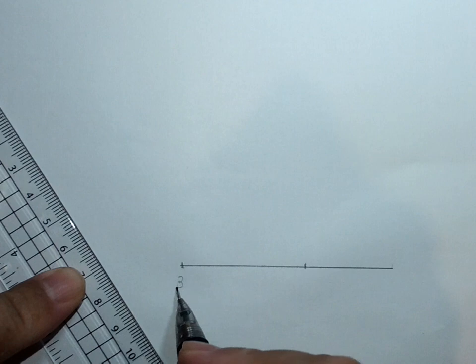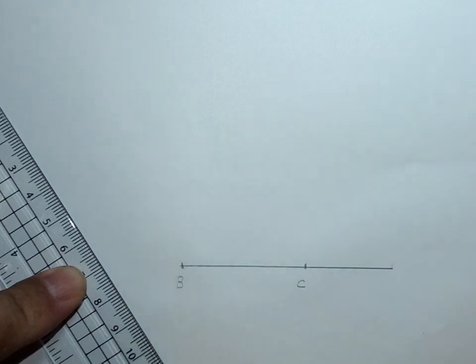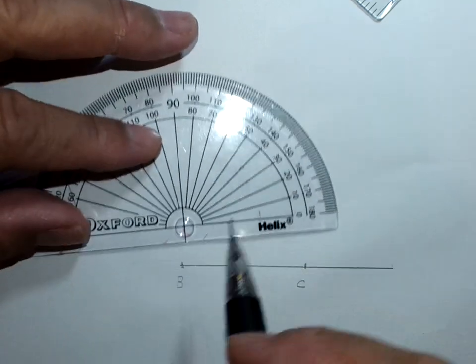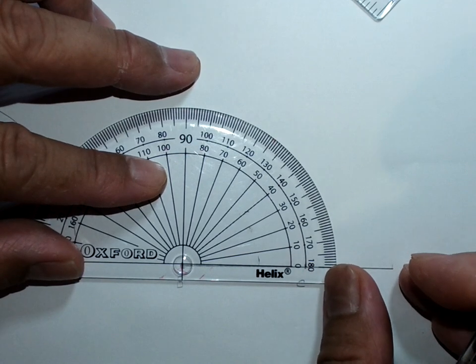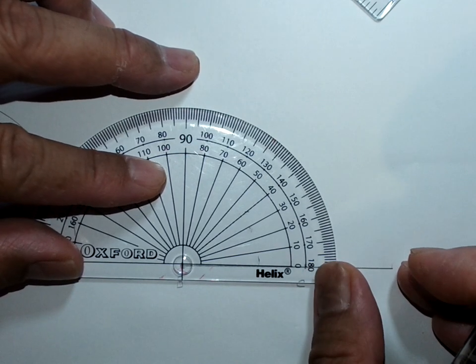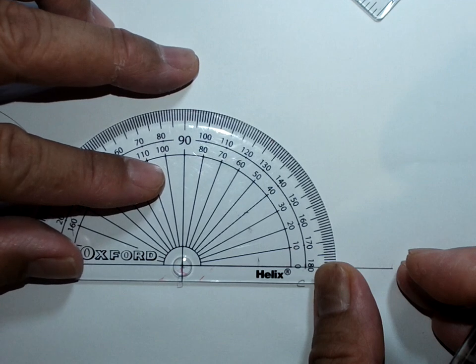The 40 degrees line, get the protractor, slip it on. Okay, place it accurately, as accurate as possible.